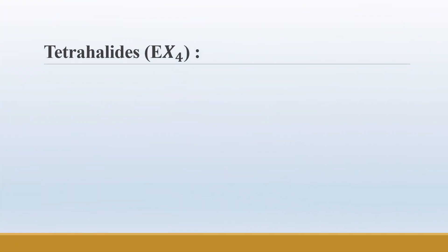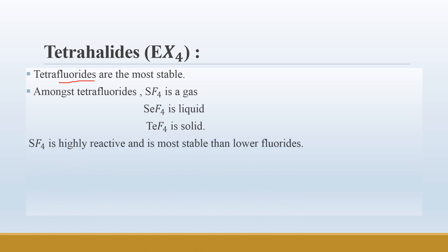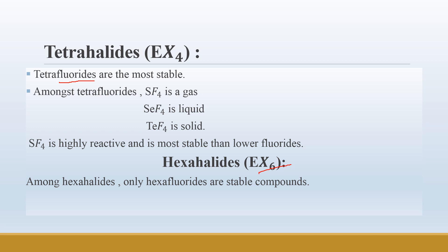Among the tetrahalides (EX4), tetrafluorides are more stable due to the higher stability of fluoride ions. Among tetrafluorides: SF4 is a gas, SeF4 is a liquid, and TeF4 is a solid. SF4 is highly reactive and more stable than lower fluorides. For hexahalides (EX6), only hexafluorides are stable compounds — no other hexahalides are stable — and all hexafluorides are gaseous in nature.